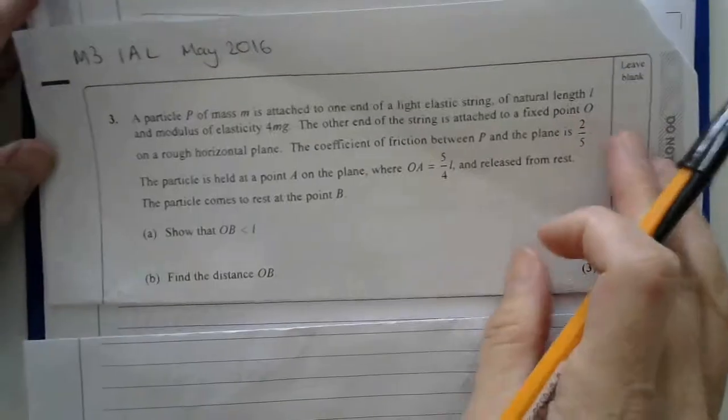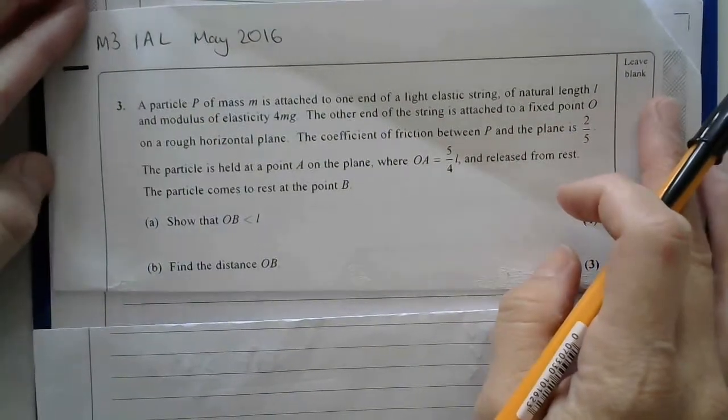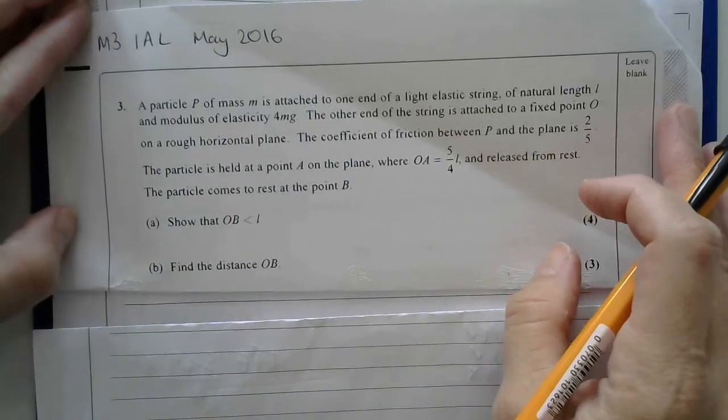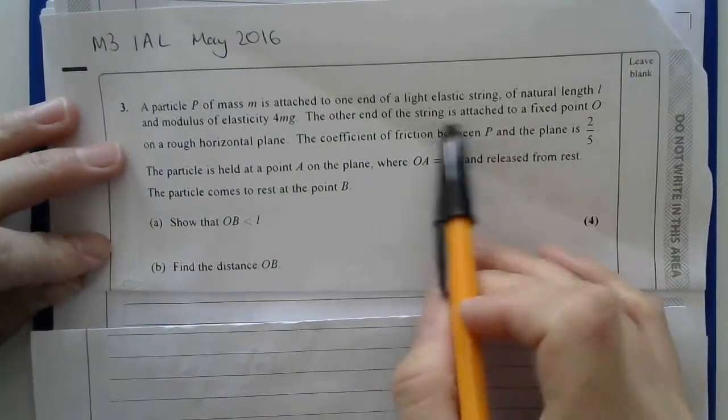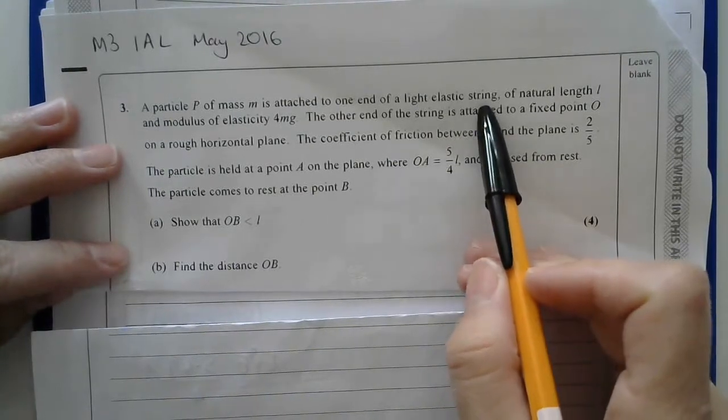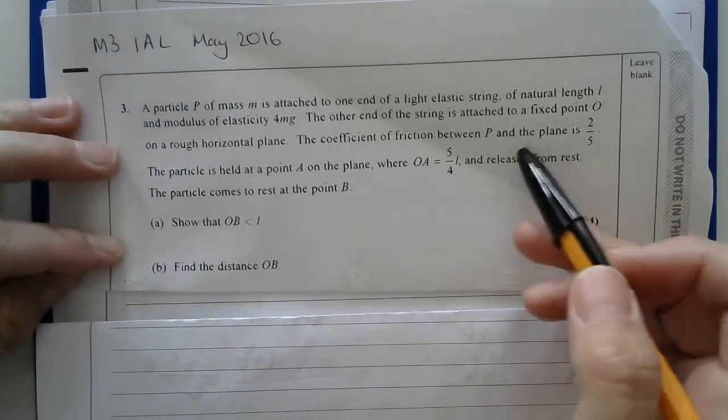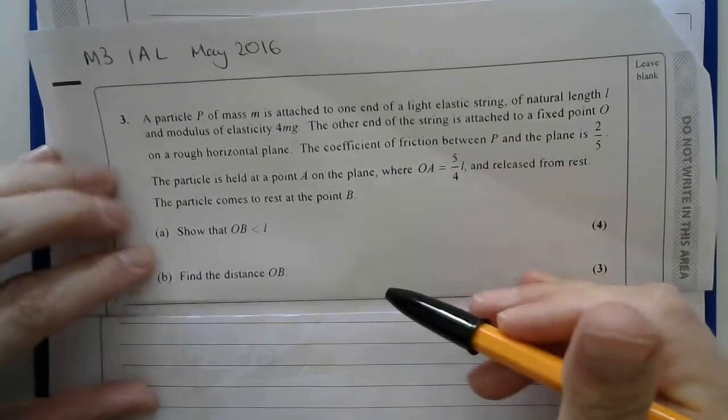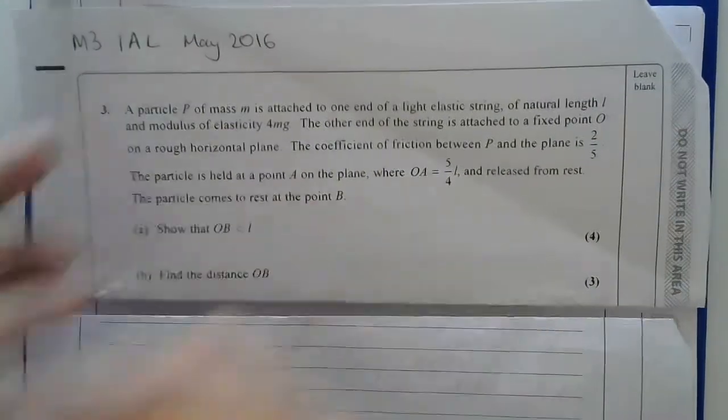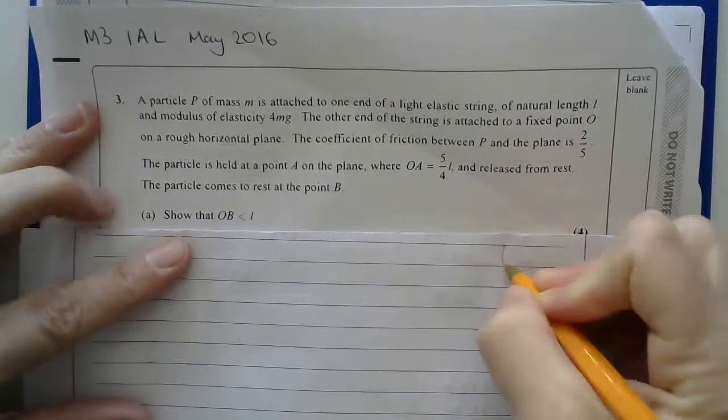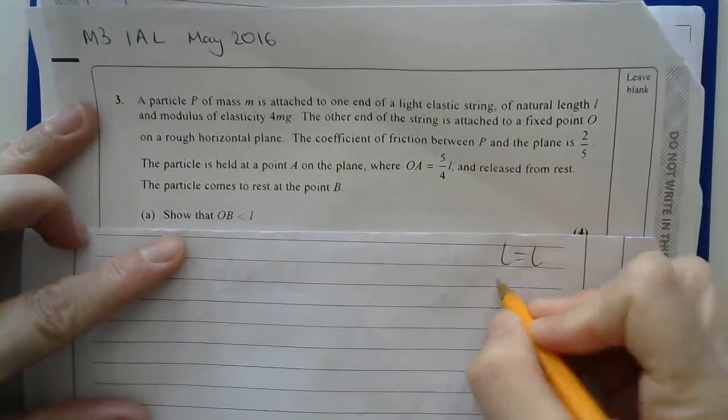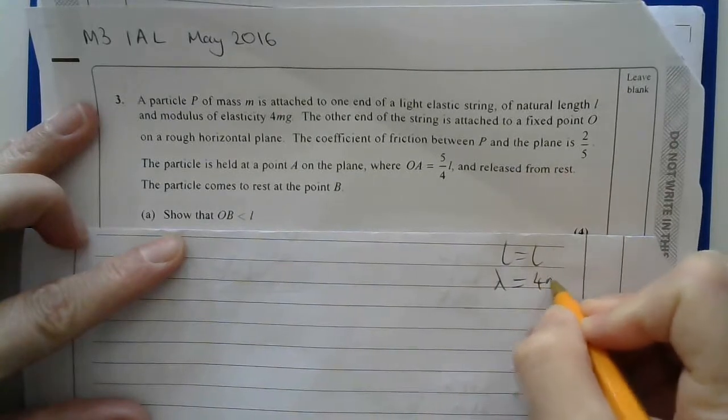Hello, today I'm looking at M3 International A Level, May 2016, question 3. Here we have particle P of mass m attached to one end of a light elastic string with natural length L and modulus 4mg, so I'll begin by making a note of that. The natural length is L, and lambda is 4mg.